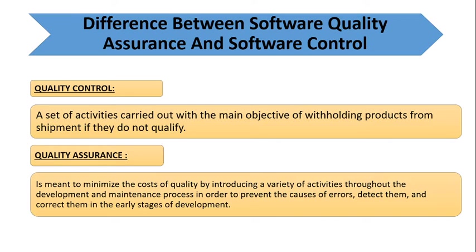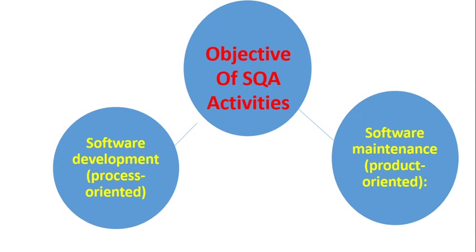The difference between software quality assurance and software quality control: Quality control is a set of activities carried out with the main objective of withholding products from shipment if they do not qualify — if a module does not pass testing, it is not delivered to the customer until qualified. Quality assurance aims to minimize the cost of quality by introducing activities throughout the development and maintenance process to prevent errors, detect them, and correct them at an early stage.